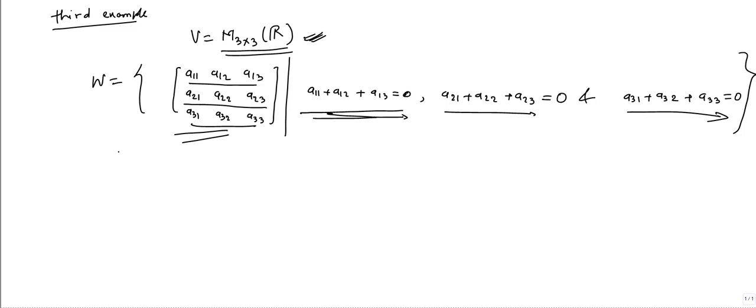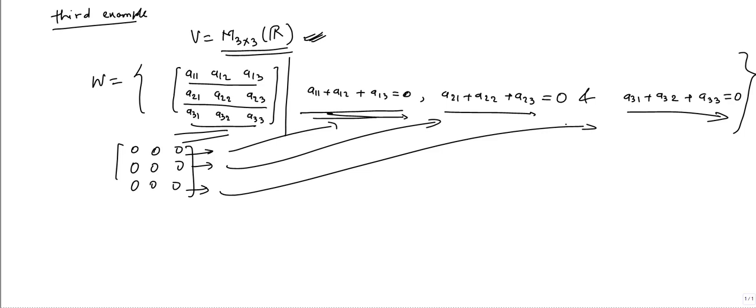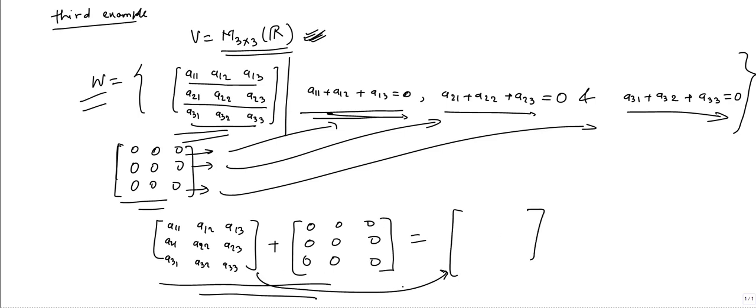So we need to check is the 0 element in W. We can think 0, 0, 0. If we see this, all rows sum up to 0 and follow this condition of W. So it means 0, this element is in W. If we add with any general element of W: A11, A12, A13, A21, A22, A23, A31, A32, A33 with this element 0, 0, 0, 0, 0, 0, if we add them, we will get the same element. So it means this element is 0 element of W and which is in W.